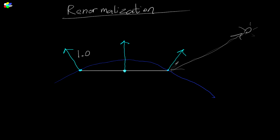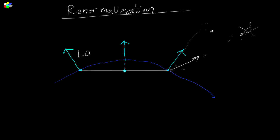Now, the thing about normals is their length is equal to 1.0, and that's important. When you do the dot product between a normalized vector pointing towards your light and the surface normal, you get basically the cosine of the angle between them — it tells you how much they're pointing in the same direction. If this were not a unit vector, you would have a scaling that would make your light brighter or darker.